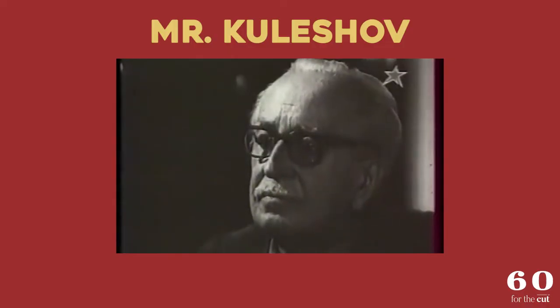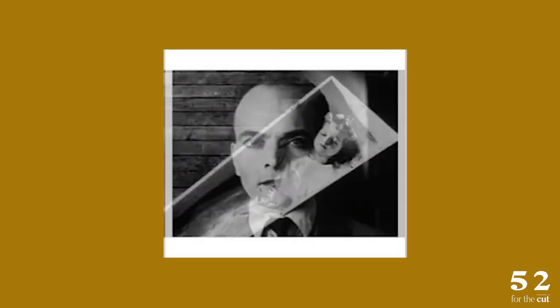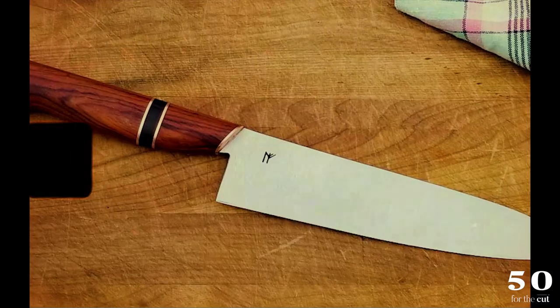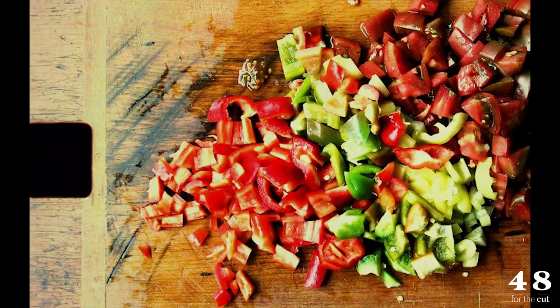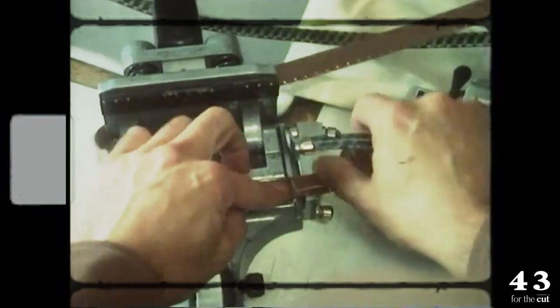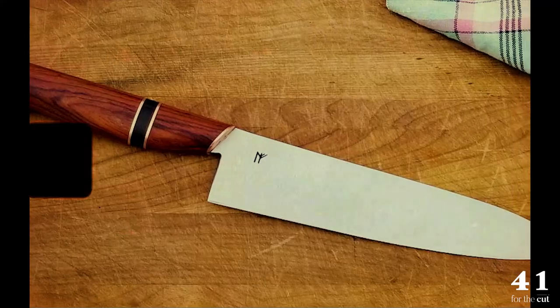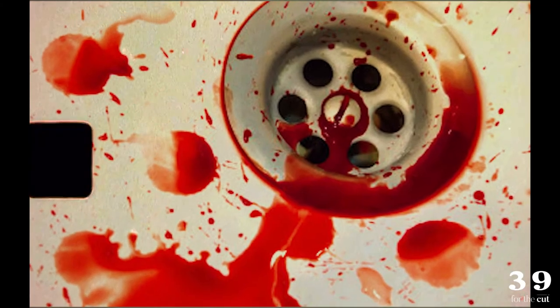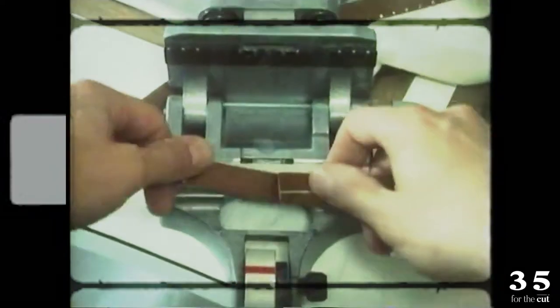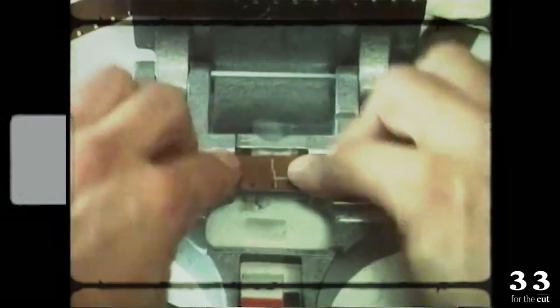Just a bit about the Kuleshov effect: this theory states a sequence of as little as two images creates a third image in the viewer's eye. Think back to the two sequences you just viewed. A kitchen knife succeeded by an image of chopped vegetables most likely gives the impression that someone's cooking. Take that same image of the kitchen knife and after it place a gruesome image of bright red blood — all of a sudden the impression of cooking is replaced with the interpretation of an act of violence.